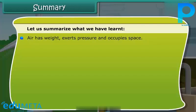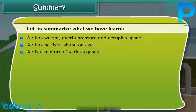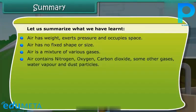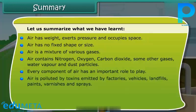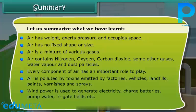Let us summarize what we have learned. Air has weight, exerts pressure, and occupies space. Air has no fixed shape or size. Air is a mixture of various gases — it contains nitrogen, oxygen, carbon dioxide, some other gases, water vapour, and dust particles. Every component of air has an important role to play. Air is polluted by toxins emitted by factories, vehicles, landfills, paints, varnishes, and sprays. Wind power is used to generate electricity, charge batteries, pump water, irrigate fields, etc. Wind energy is an inexhaustible and pollution-free resource.